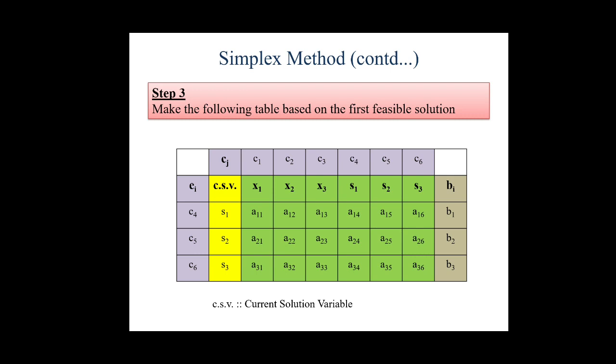The coefficients of CSV in our objective function - that is c4, c5, c6 - we will represent under the ei column. Then x1, x2, x3 are our decision variables. s1, s2, s3 are our slack variables. Their coefficients which are present in the constraint equations, we will represent here by means of a11, a12, a13, etc., which is all highlighted with green color.